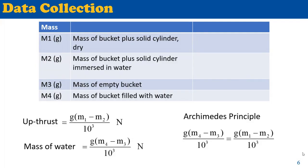Once we have collected the data, we can use the concept of Newton's second law. The force is equal to mass times acceleration, F equals MA. Acceleration in this case is the gravitational acceleration g. So F equals Mg. We can get the up-thrust as M1 minus M2 multiplied by g. And the mass of water, here we are talking about the mass of the water displaced by the cylinder, would be M4 minus M3 multiplied by g. So according to Archimedes principle, our goal would be to see if the up-thrust and mass of water are the same.